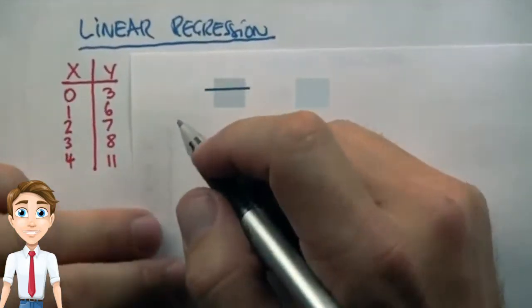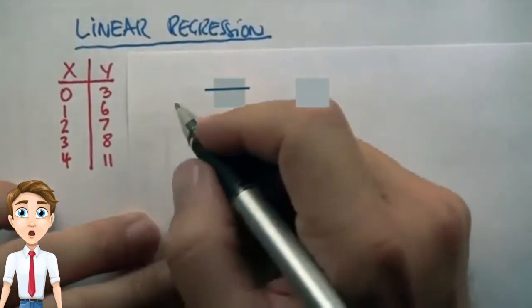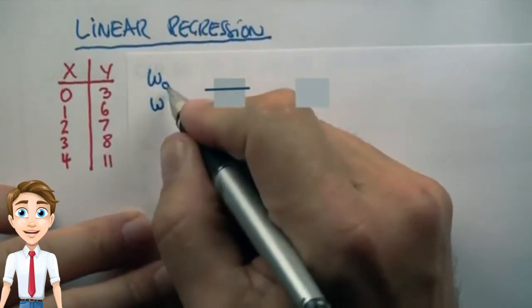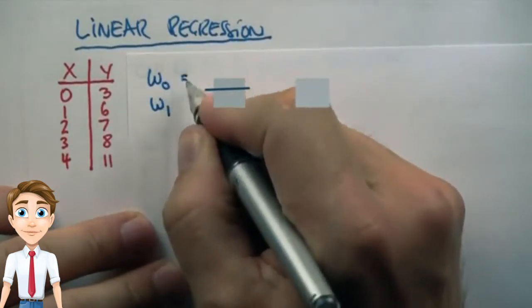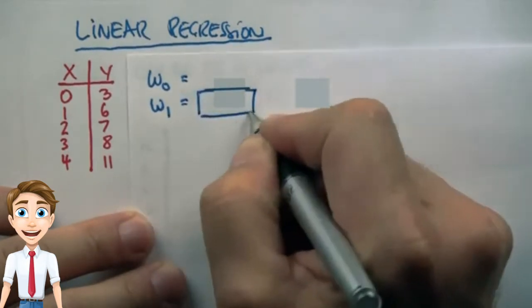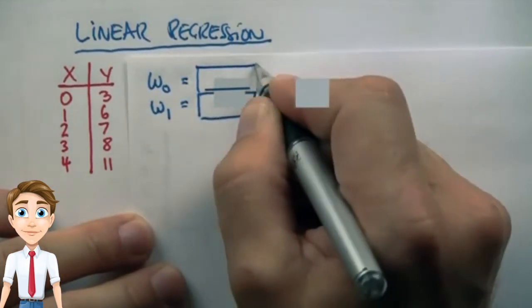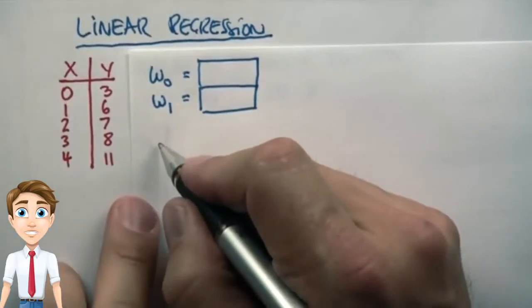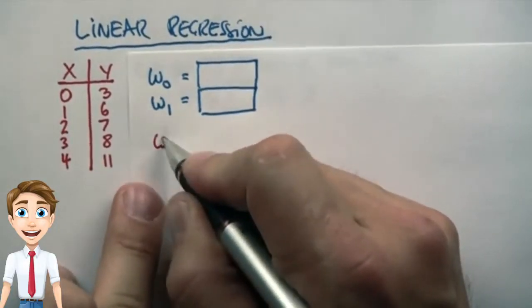I would now like to ask you to perform linear regression on these data points and calculate for me w0 and w1 as defined in this class. You might have to go back and look at the exact formula from the lecture that I taught on linear regression. For answering these questions, let me restate the essential formulas.